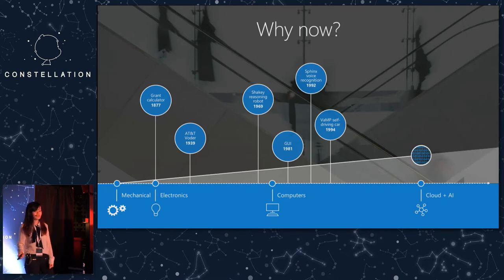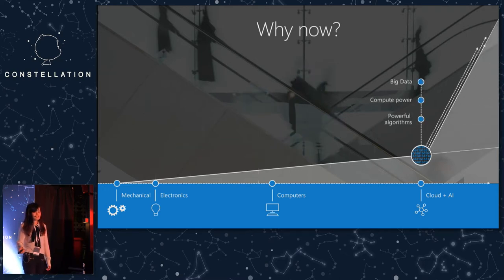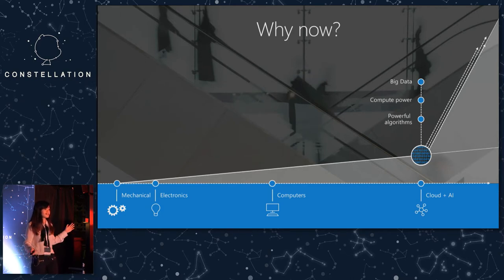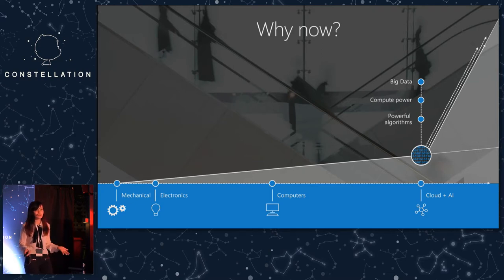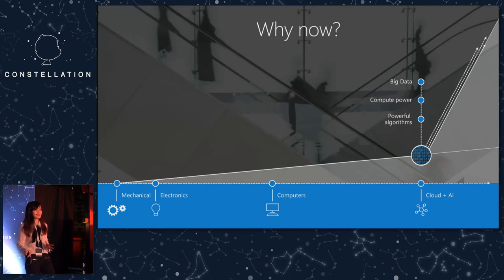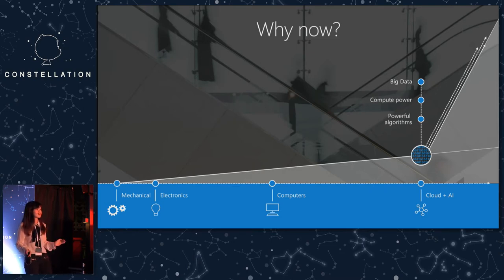So why is AI becoming such a big topic now? There are three reasons. First, we're getting a lot of historical data nowadays. Second, the cloud is starting to provide tons of compute power — you can run GPU VMs on the cloud which are powerful enough to run machine learning algorithms. Third, research teams are making huge advancements in machine learning algorithms.